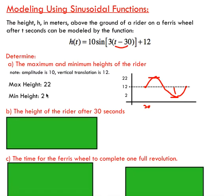So the highest point we're going to reach will be 22, and the lowest should be 2. 22 meters above the ground, 2 meters above the ground. Part B asks us to find the height of the rider after 30 seconds. Remember this is a function, so we can substitute in an x value and get out a y value, or in this case we can sub in a time and get a height.